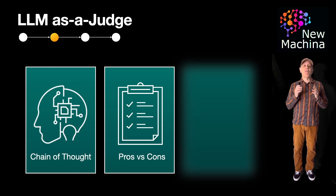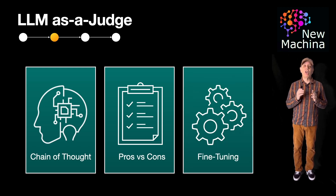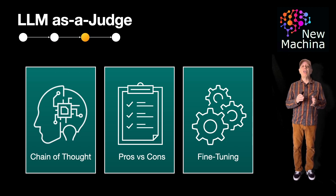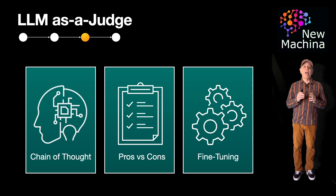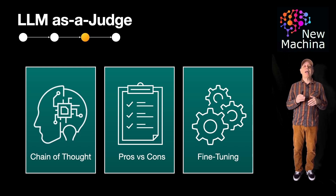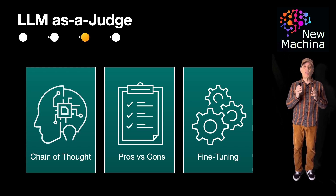The third method is to fine-tune your judging LLM for judging. With this method, the LLM is trained only to judge and not to generate. You fine-tune the LLM so it's aligned to your human scoring preferences. Think of this method as a specialized LLM critic trained just to evaluate answers.